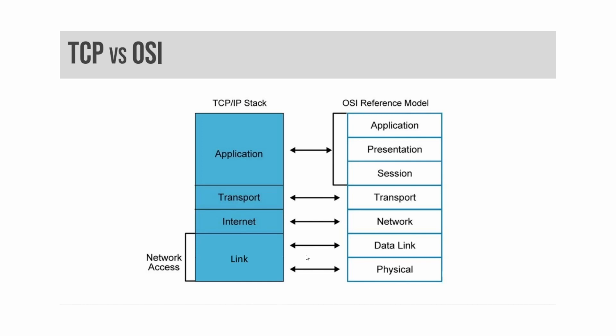The host-to-host transport layer, more commonly called simply the transport layer, connects the internet layer to the application layer. It is where applications are addressed on a network via ports. TCP and UDP are the two transport layer protocols used in TCP/IP.